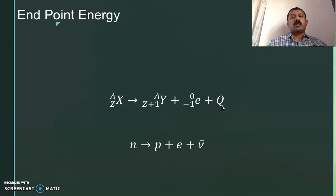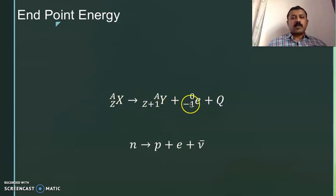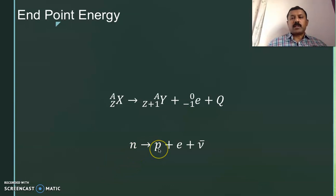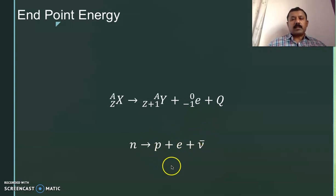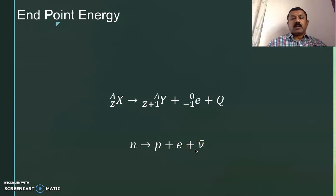We have beta plus decay also, which takes place in artificial radioactivity. In that case the parent nucleus emits a positron instead of an electron. In natural radioactivity we get the beta minus particle, that is an electron. Beta decay occurs because of the conversion of a neutron to a proton inside the nucleus. The proton remains inside the nucleus and the electron comes out along with another particle called the anti-neutrino. The total energy released is shared between these two particles — if the beta particle carries more energy, the anti-neutrino carries less, and vice versa.